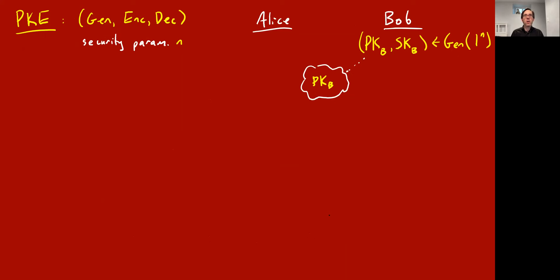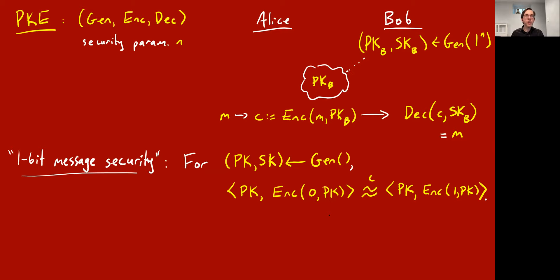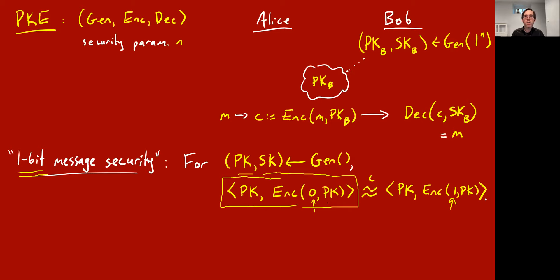There's a notion for public key encryption of one-bit message security, which is exactly like one-message security but even weaker — it only refers to messages that are one bit long. It says that when you have the public key and the secret key, whether Alice is encrypting the single-bit message zero or one, anybody that sees Bob's public key together with the encryption cannot tell the difference if they're PPT. So that's the definition: inability to tell the difference between an encryption of zero and one, even knowing the public key, as Eve certainly does.